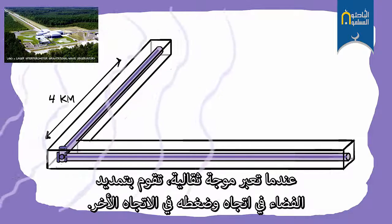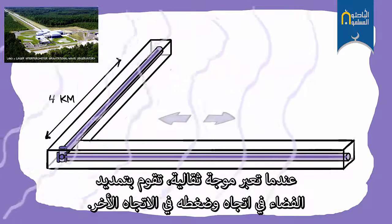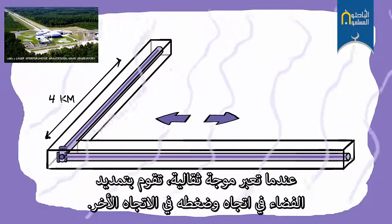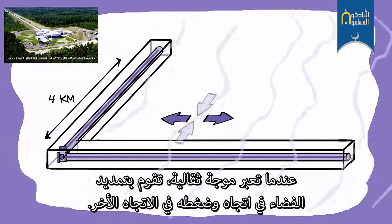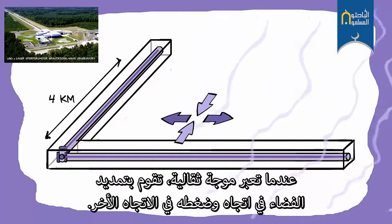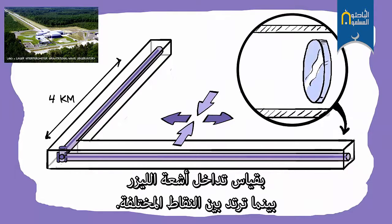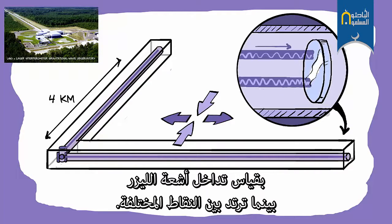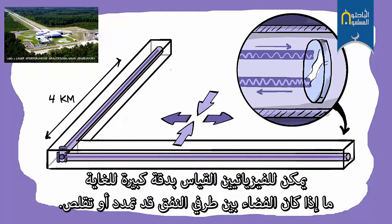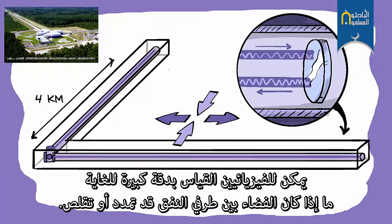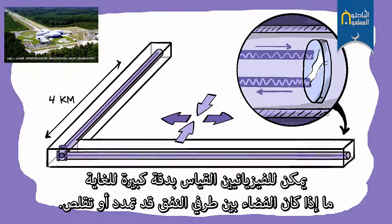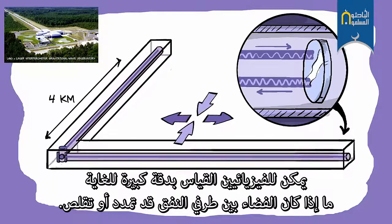When a gravitational wave comes through, it stretches space in one direction and squeezes space in the other direction. By measuring the interference of the lasers as they bounce between the different points, physicists can measure very precisely whether the space in between has stretched or compressed.